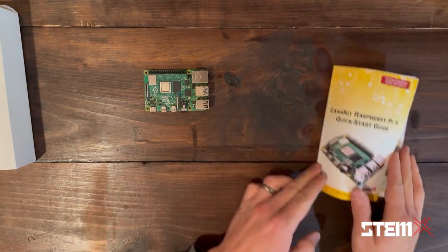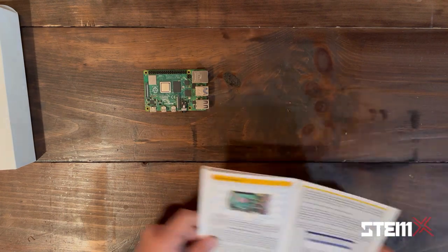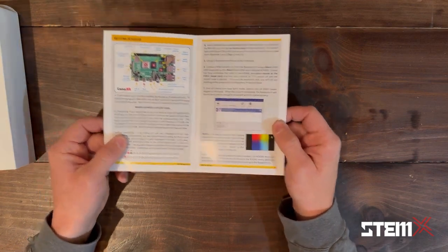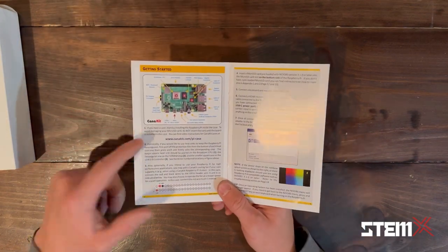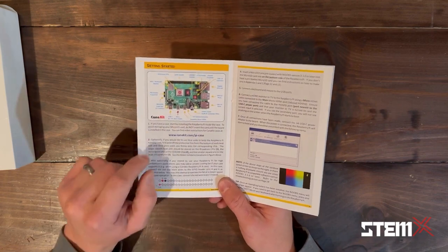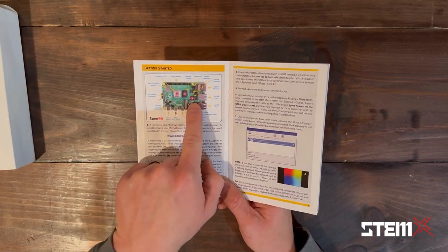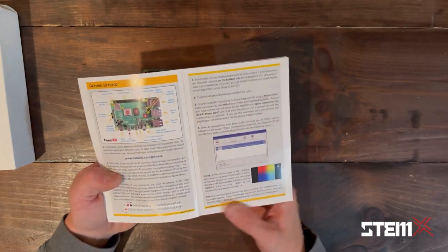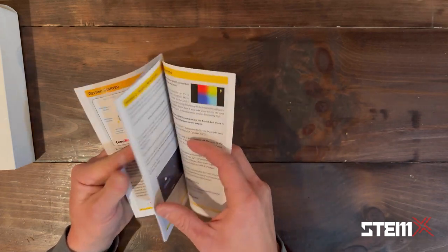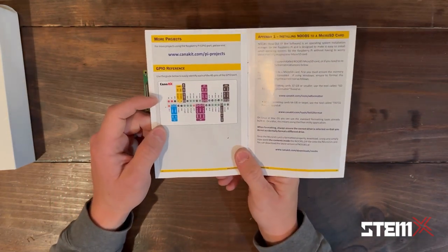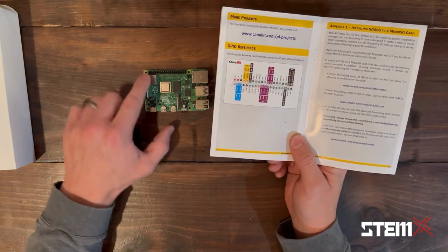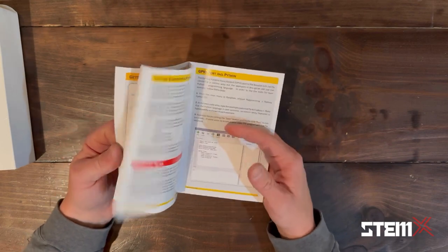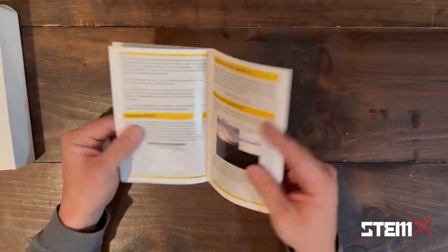Before we get started, an important and intelligent thing to do is to take a look at the quick start guide that came with each one of your kits. It has very helpful information such as the layout of your board, the CPU, the RAM, the Wi-Fi controller. It also has helpful information on the general purpose input output pins, the GPIO pins that we'll be using here in a moment. And it has some great information that will help you in getting started.